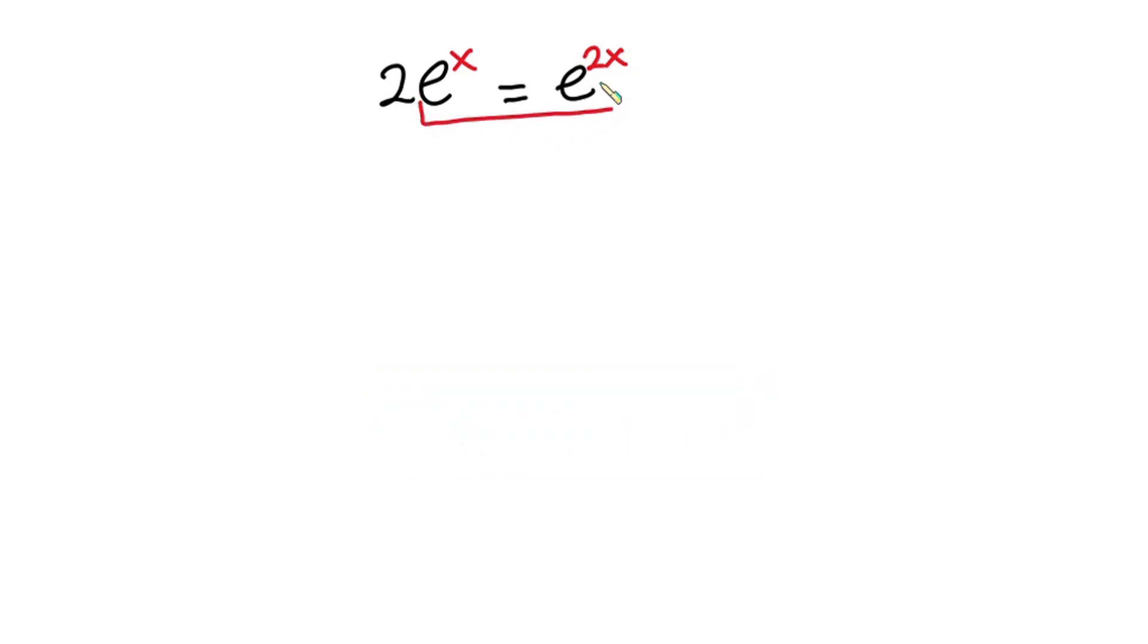First considering this whole thing, you can see the bases are the same and they are being separated by this equal sign. So this means we can equate the exponent, right? No, we can't do that because of these two. So what should we do then?